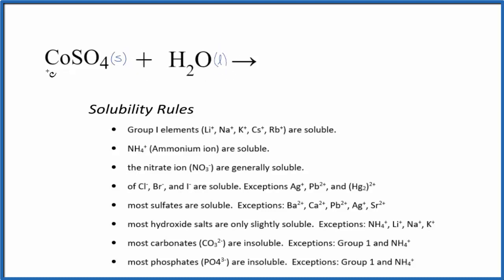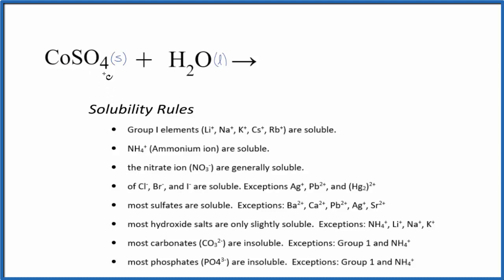Cobalt is a metal, and then the sulfate, SO4, the sulfate ion, is a group of nonmetals. So this should be an ionic compound, and often they're soluble in water. But we should check the solubility rules here.